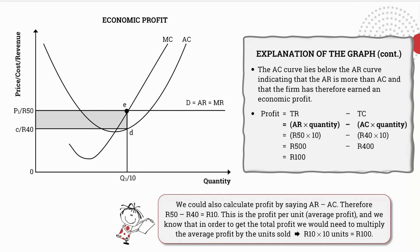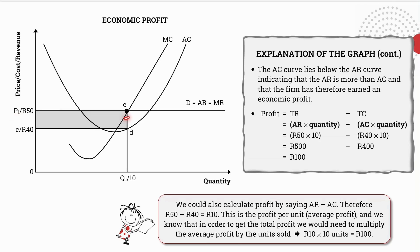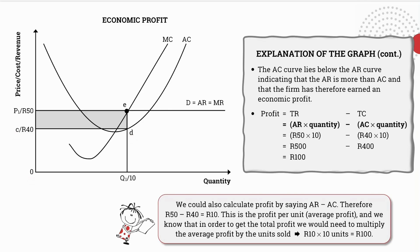It really doesn't matter which method you use — you'll come out to exactly the same answer. If you choose not to work with numbers and instead want to work with letters, that's absolutely fine. Total revenue is the area 0P1EQ1, and total costs is the area OCDQ1, which means the profit is the area CP1ED. You have choices in terms of which method you use and whether you work with numbers or letters.